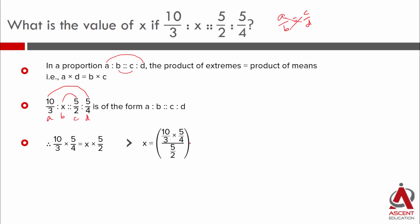5 by 2 becomes reciprocal, 2 by 5. So, 10 by 3 into 5 by 4 into 2 by 5. 5 and 5 cancel. 2 cancels with 4 to leave 2. Then 2 cancels with 10 to leave 5. So, x equals 5 by 3.